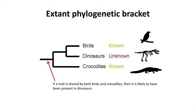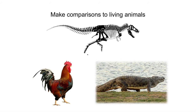The extant phylogenetic bracket follows that if two living organisms bracket the phylogenetic relationships of a fossil group, a trait common to both living groups is likely to have been present in the fossil group. This extant phylogenetic bracket method is often used in the study of dinosaurs. If a trait is found in both birds and crocodiles, then it is assumed that it was likely present as well in dinosaurs.